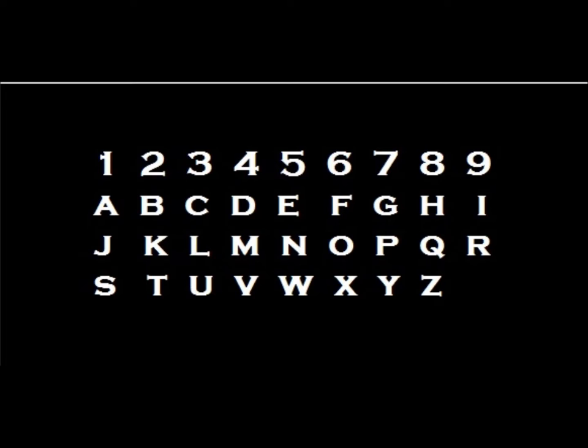All square numbers are related in that they are all the products of some other number multiplied by itself. All negative numbers are related in that they all fall below zero on the number line. In a sense, no number can be fully understood apart from its various relationships with other numbers.